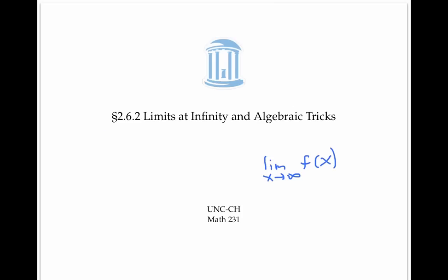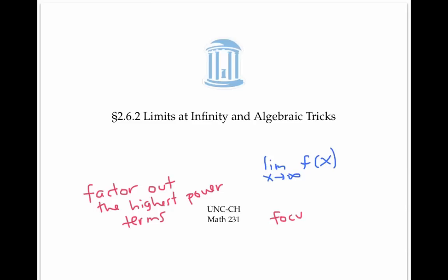So in that last example, we used the conjugate trick. But in all the other examples, we relied heavily on just one main idea: the idea of factoring out the highest power terms. We also noticed that informally, to calculate limits at infinity for rational functions, we can just focus on the highest power terms and ignore everything else.